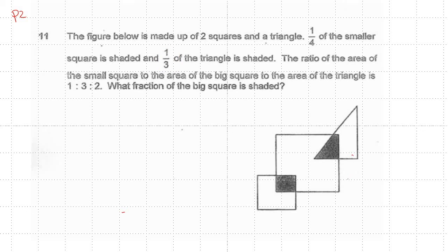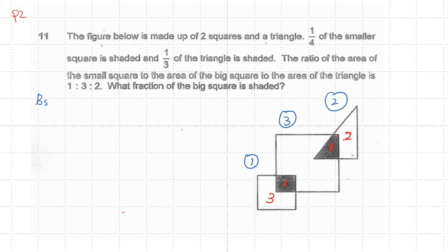Okay, this is your careless mistake but you got it wrong, so we need to go through it. It says that one fourth of a smaller square is shaded — here is one and here is three. And one third of the triangle is shaded — here is one and here is two. The ratio of the small square to big square to triangle is one to three to two.